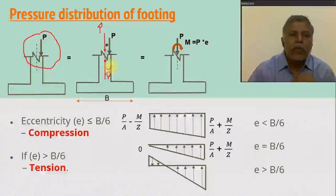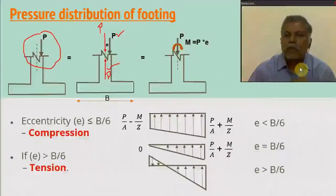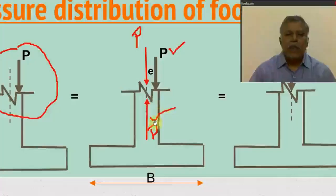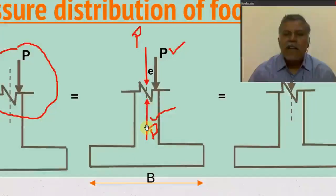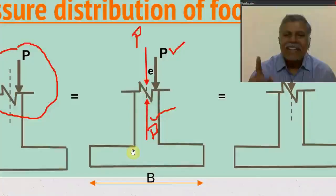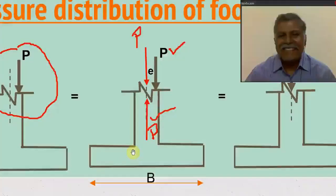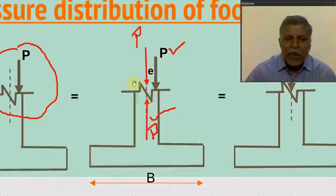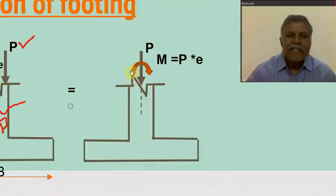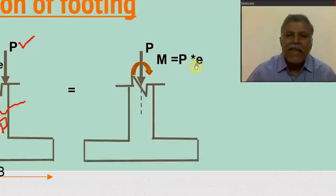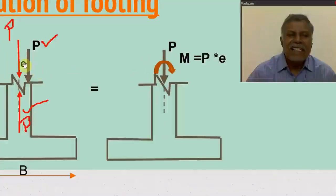Now I am considering these two forces. These two forces are parallel, equal in magnitude, and opposite in direction — they will form a couple. Due to this, I will replace this eccentric load with a load P plus a moment M, where M is equal to P into e, and e is the eccentricity.